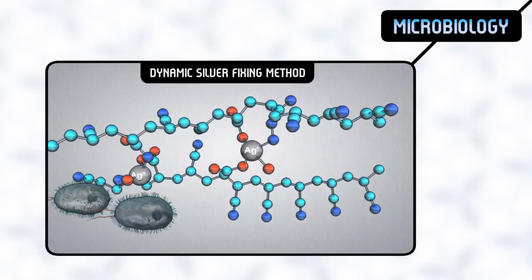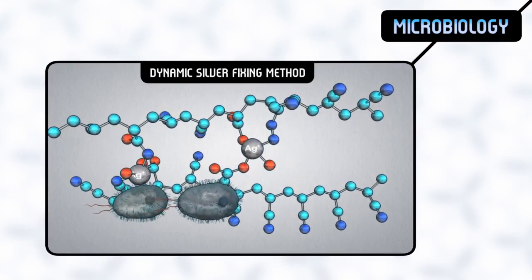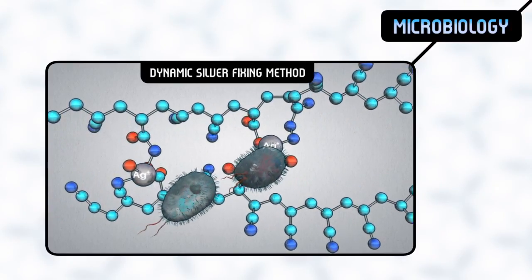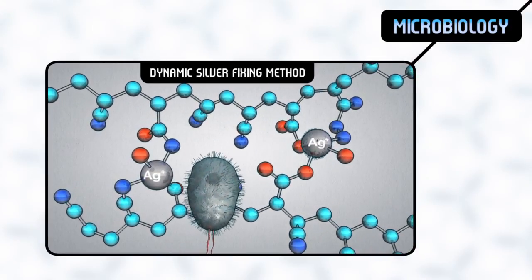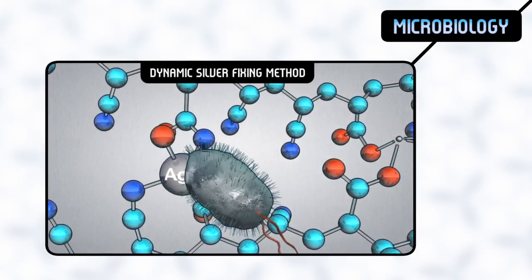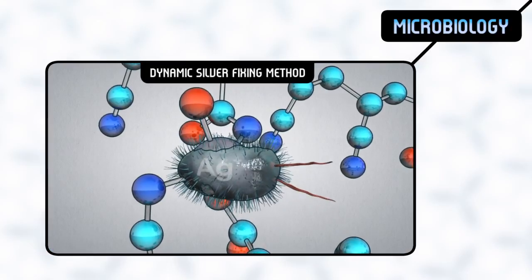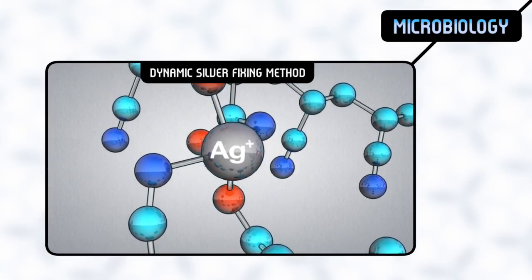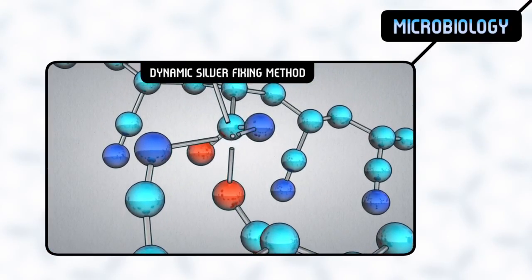Aqualem's chemical properties allow for dynamic fixation of silver for a stronger bactericidal effect. Silver is embedded in the most effective ion form. This increases the bactericidal effect dramatically, while the concentration of silver is lower, which is in compliance with European requirements.